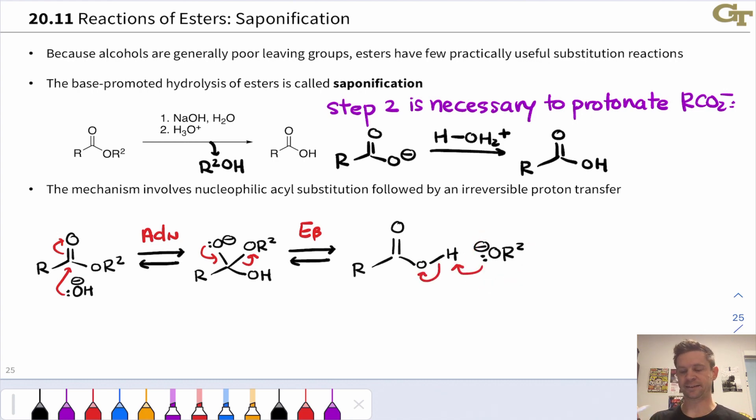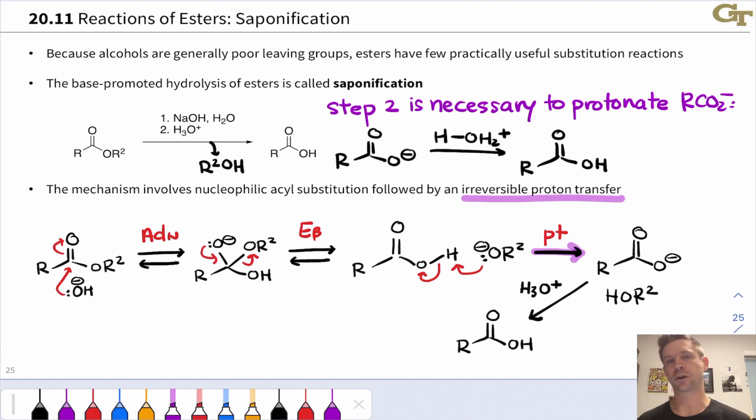The driving force comes in in the next step, when OR- deprotonates this carboxylic acid intermediate, and the final product we end up with before the acid addition is the anionic carboxylate, as well as the neutral alcohol, R2OH, the conjugate acid of this base. If we want the neutral carboxylic acid, we've got to treat that carboxylate with acid, and this protonates the carboxylate to make the carboxylic acid. What really drives this reaction is this irreversible proton transfer step, this extremely favorable proton transfer from a carboxylic acid to an alkoxide, generating a carboxylate much more stable than OR- as well as the neutral alcohol.